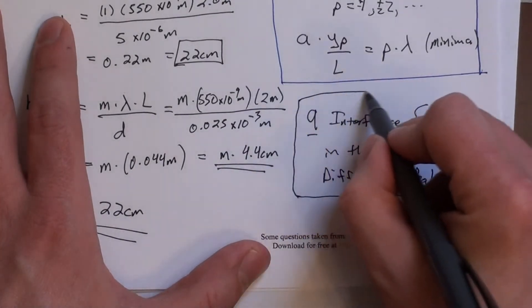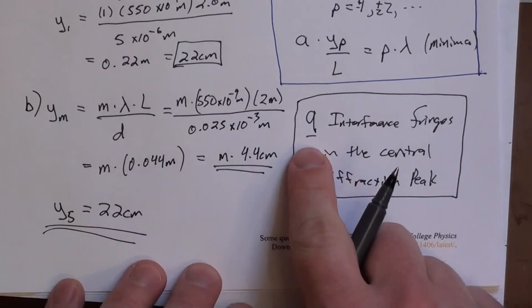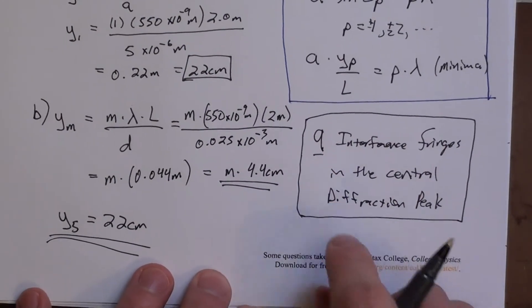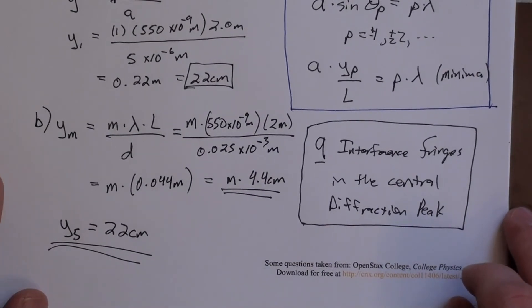And if you go through this math carefully, you'll actually see that this number doesn't depend on L, and it doesn't depend on lambda either. All it depends on is the ratio of A and D.